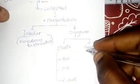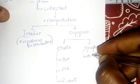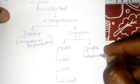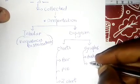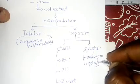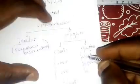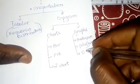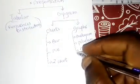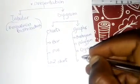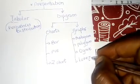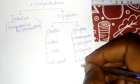Then when we talk of graph, we have histogram. We have polygons. Then we have an ogive. We also have Lorenz curve.